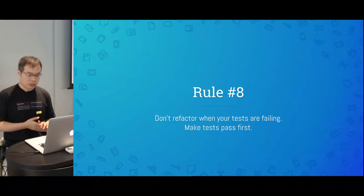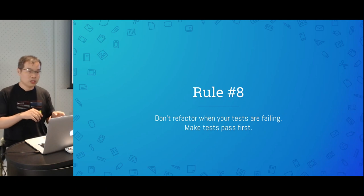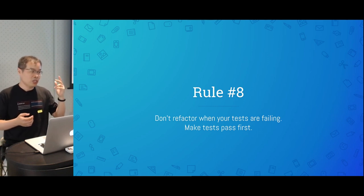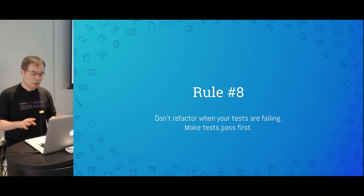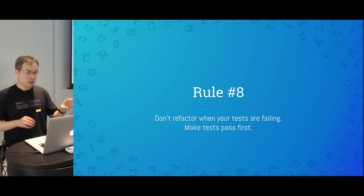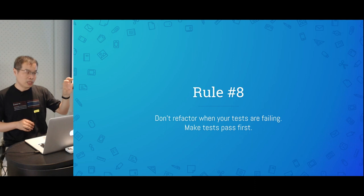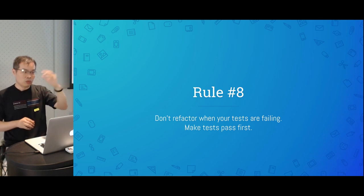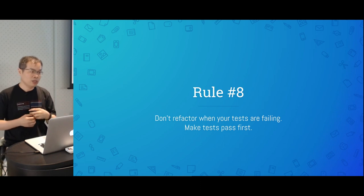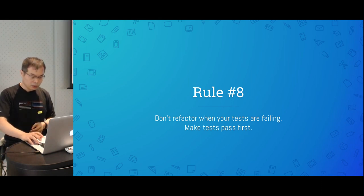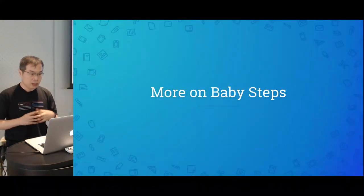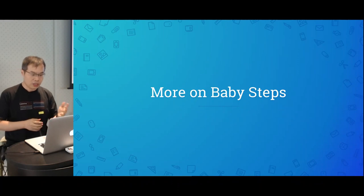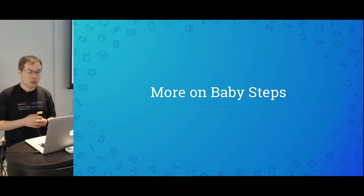Rule eight: do not mix the second step and the third step. When implementing code to make a test case pass, you may notice some ugly code and feel tempted to refactor it right away — don't. Remind yourself: you should only be in one of those three stages at a time — writing a test case, making it pass, or doing refactoring. Make your code pass first, then you have time to do whatever refactoring you like.